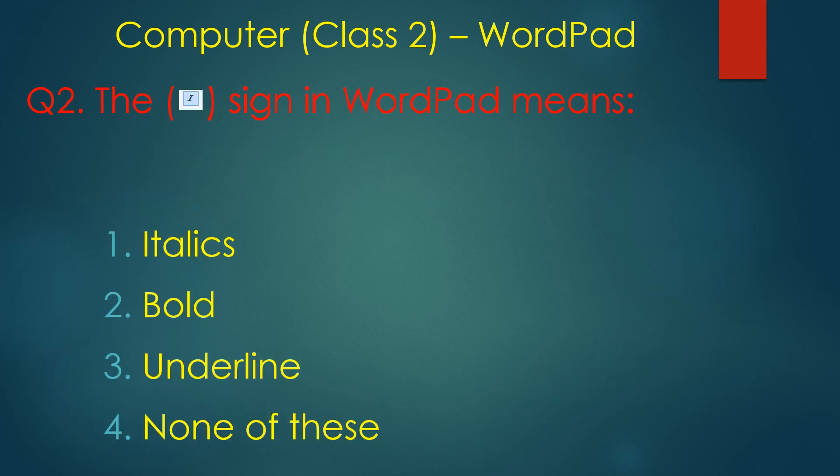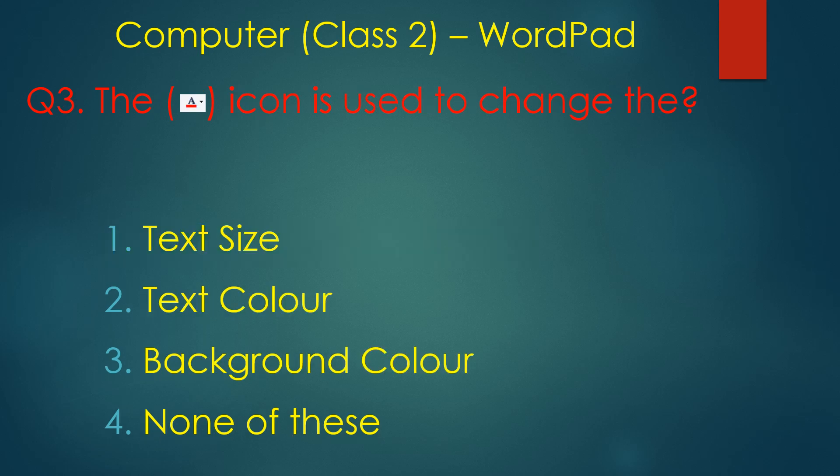This dash sign in WordPad — italic, bold, underline — the 'I' icon means italic. Italic is the correct answer. The dash icon is used to change text to italic style.